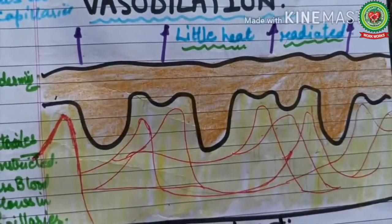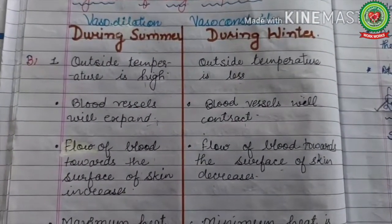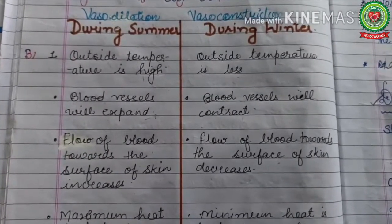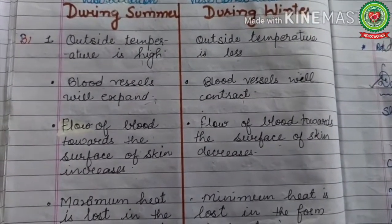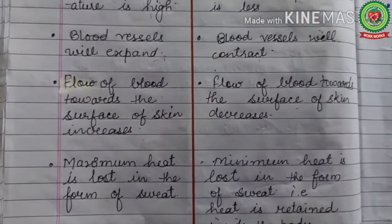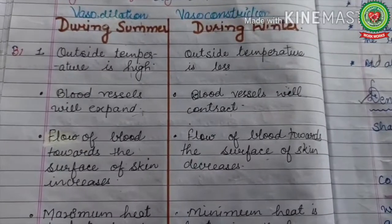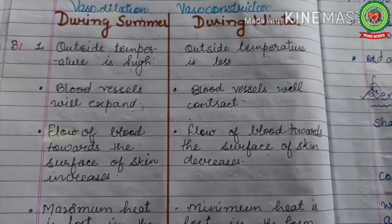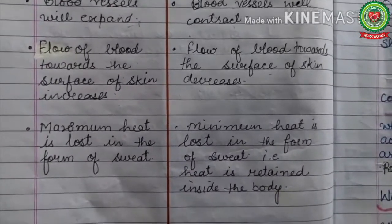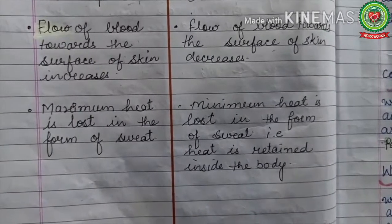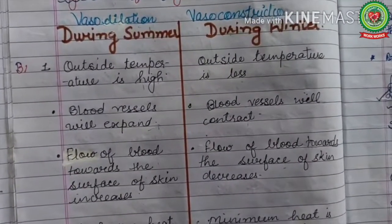To summarize: vasodilation occurs during summer season when outside temperature is high — blood vessels expand, flow of blood towards the skin surface increases, and maximum heat is lost as sweat. Vasoconstriction occurs during winter season when outside temperature is low — blood vessels contract, flow of blood towards the skin surface decreases, and minimum heat is lost, so heat is retained inside the body. Note this difference in your copies.